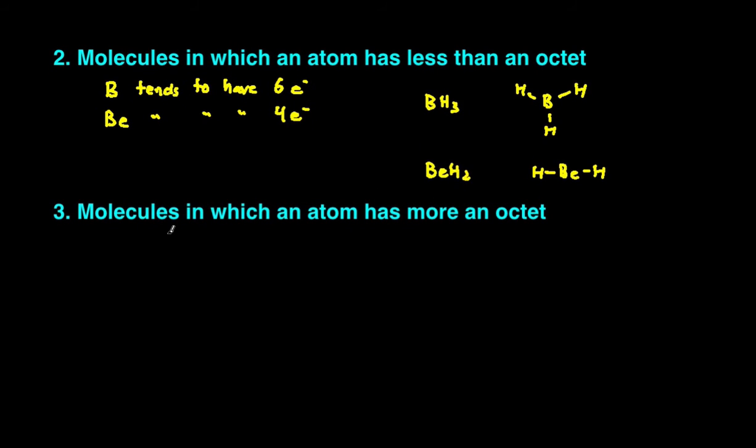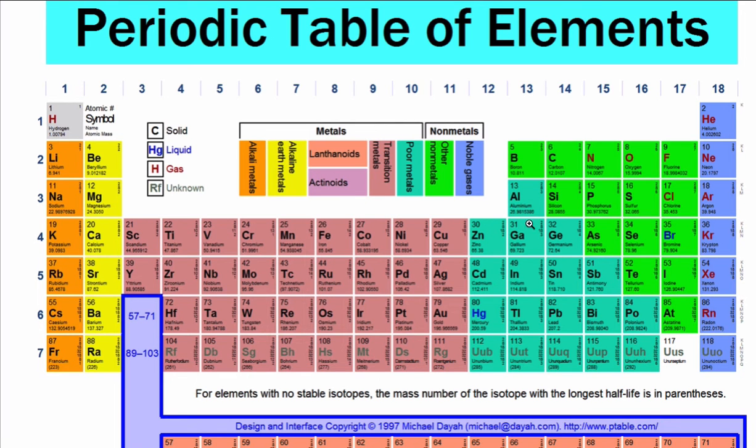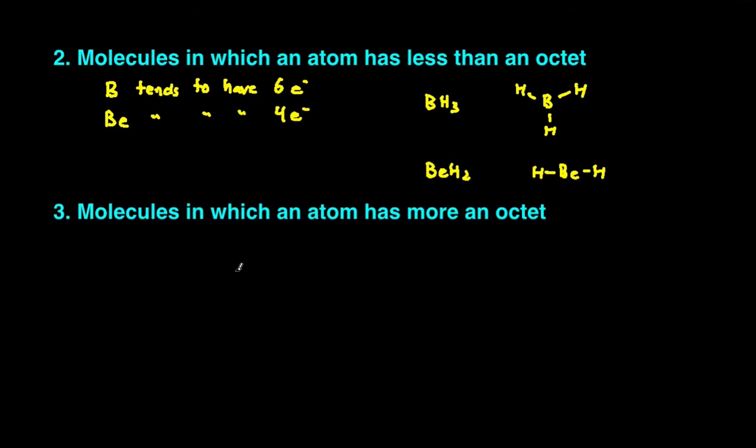And then the last category: there are certain atoms that can exceed the octet rule, that can have more than eight valence electrons or eight electrons around it. And those are the atoms or the elements in the third row or lower. So any element in the third row or lower can exceed the octet rule and have more than eight electrons around it.